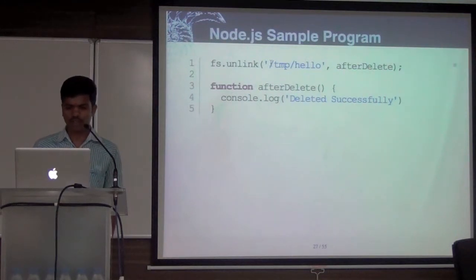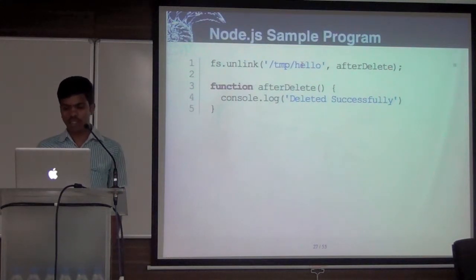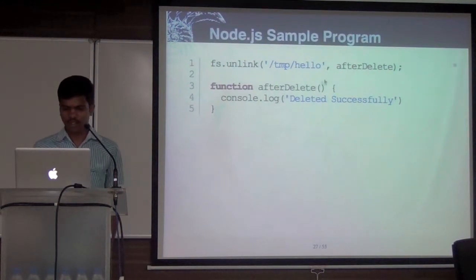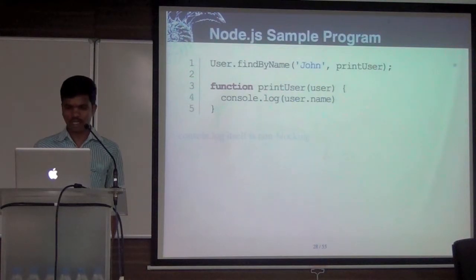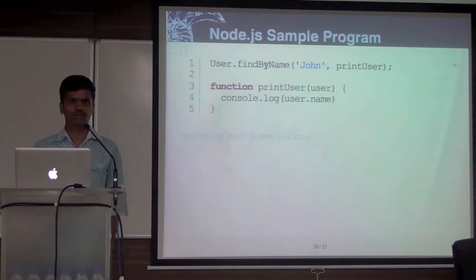For example, if you call fs.unlink on some file, what will happen is it will post the task into the queue. Once that is done — after the delete is executed — the callback will get executed. Another example: get a record from the database. user.findByName of 'John' — I'm passing the name, I want a record. Typically you assign the return value to a local variable and use it.